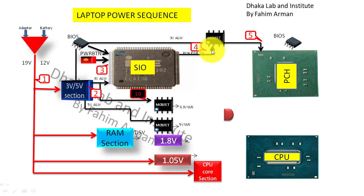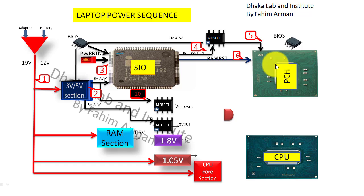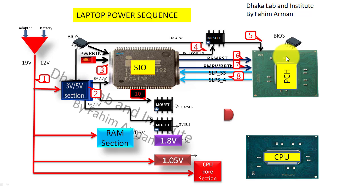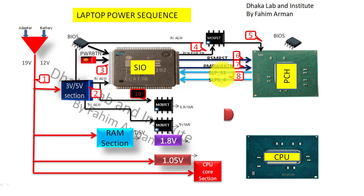3 volts always will go to that MOSFET, then PCH power enable will be in that MOSFET, and then the MOSFET will pass 3 volts always to PCH. Then PCH power enable will go to that MOSFET. SIO will provide RSM RST signal to PCH, and there will be another signal which will pass from SIO to PCH — that is PM power button. After having these two signals, RSM reset and PM power button, PCH will provide two signals to SIO: that is SLPS3 and SLPS4.